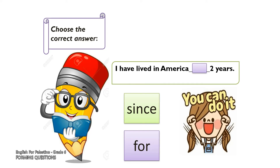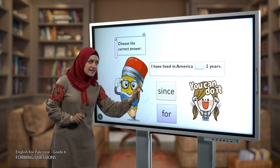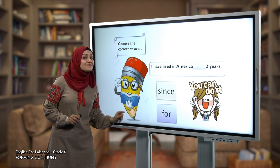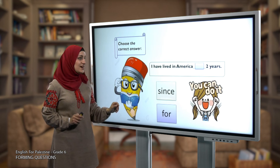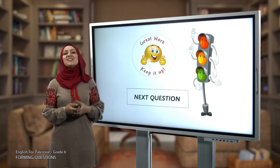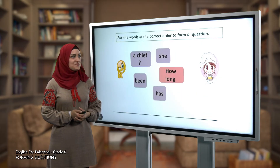Now let's play and practice together. Choose the correct answer: 'I have lived in America ___ two years.' What do you think — 'since' or 'for'? The answer is 'for.' 'I have lived in America for two years.'